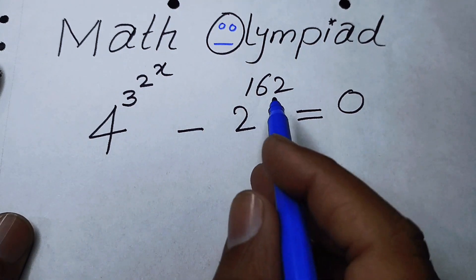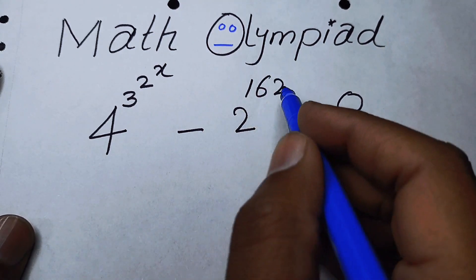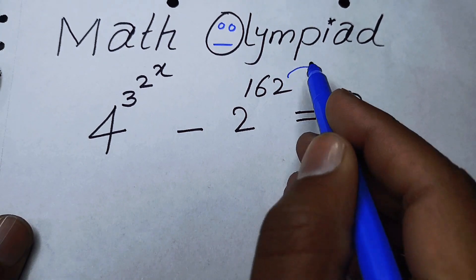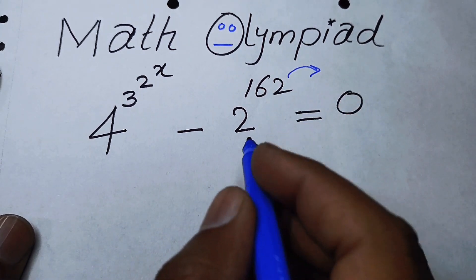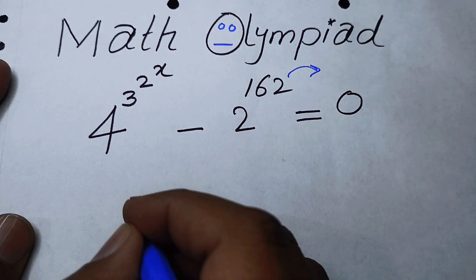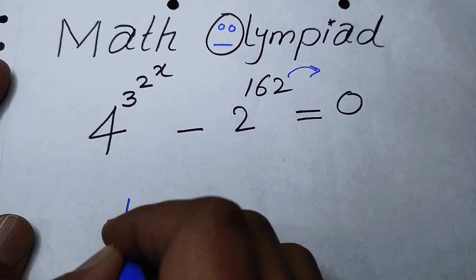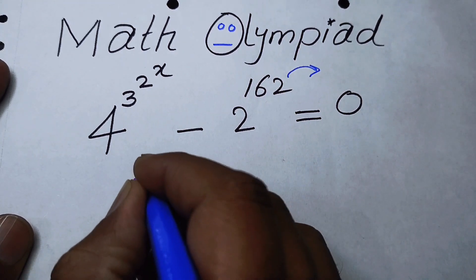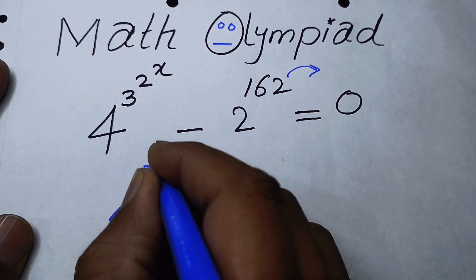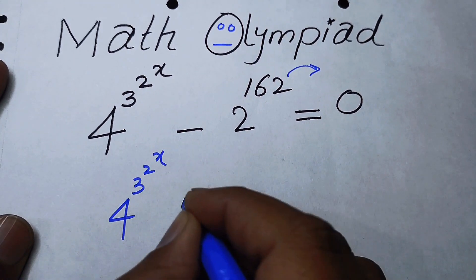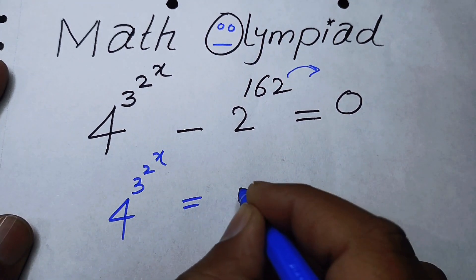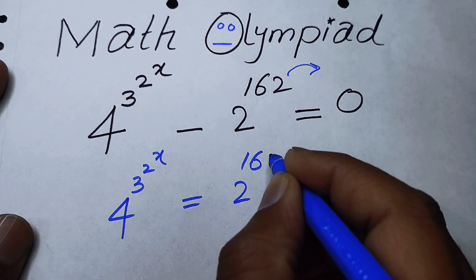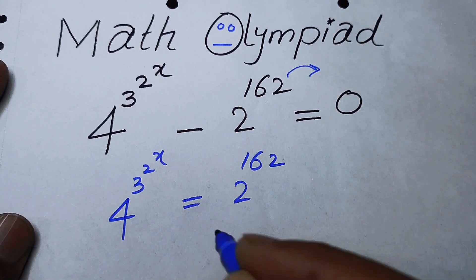We will write it in the form of 4 to the power of 2 to the power of x, is equal to 2 to the power of 162.